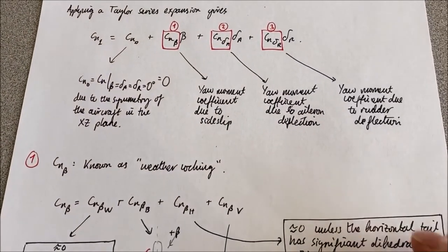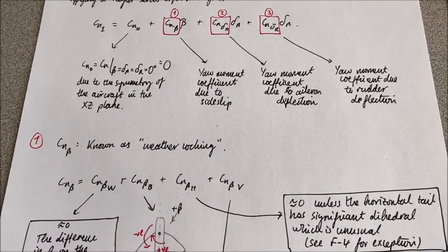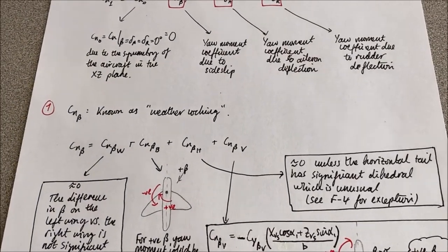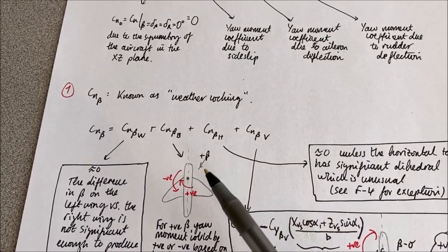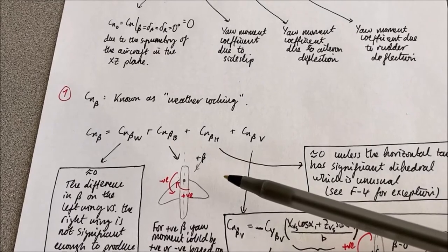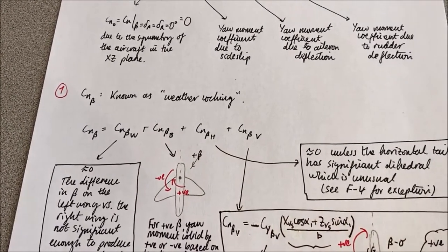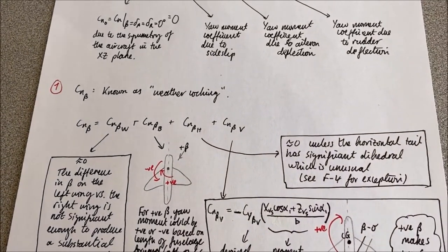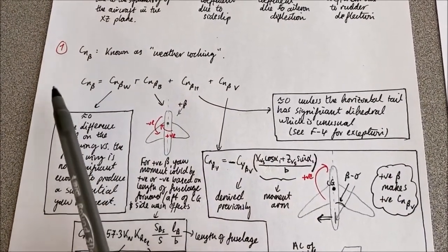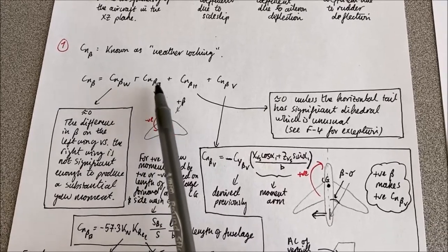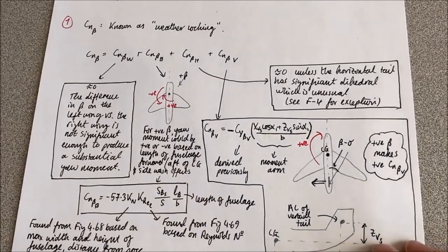First, let's deal with term number one: the yaw moment coefficient due to sideslip. This is known as the weathercocking effect, because sideslip coming from one side of the aircraft can rotate the aircraft in the yawing sense around the center of gravity. To model this complicated coefficient, we split it into contributions from the wing, body, horizontal tail, and vertical tail separately and deal with them individually.